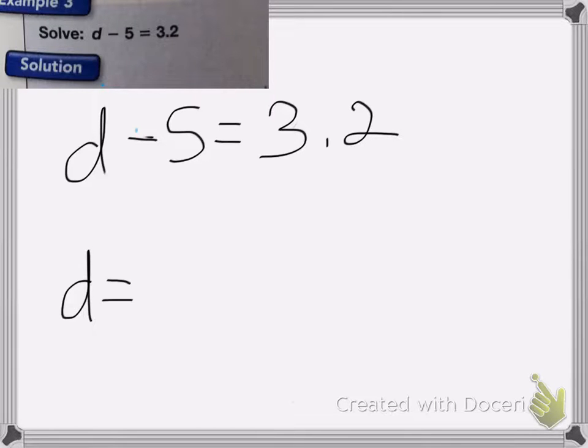So, the way you get a letter by itself is you're going to do the opposite of whatever's around it. In this case, I have D minus 5. So to get rid of this minus 5 here, I'm going to add 5 to both sides. Because whatever you do to one side, you have to do to the other.